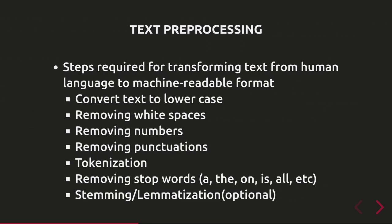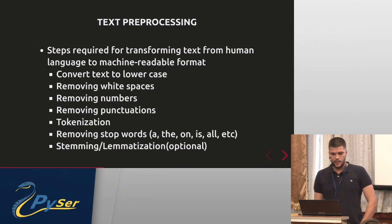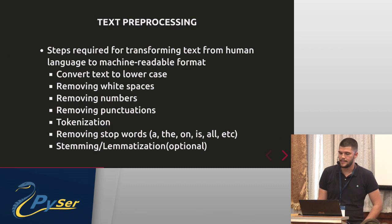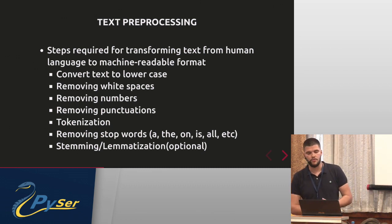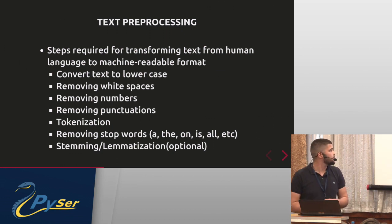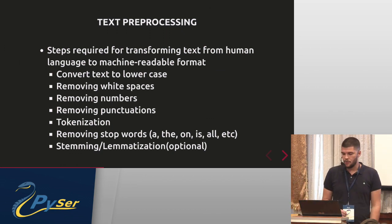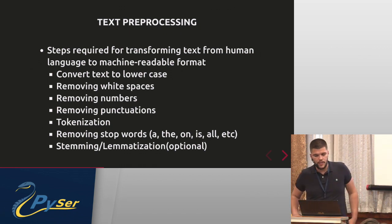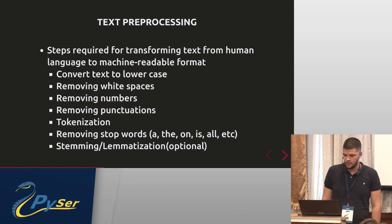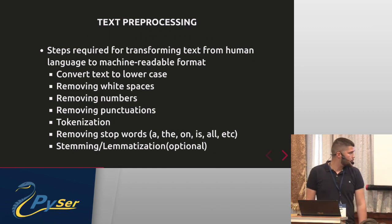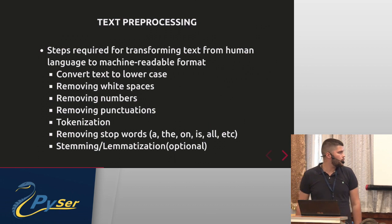The next step is text pre-processing — a list of steps required for transforming text from human language to a machine-readable format. Some of those steps are: converting text to lowercase, removing whitespace, removing numbers, removing punctuation, tokenization, removing stop words (which is optional), and stemming and lemmatization (also optional).